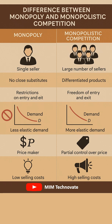The demand curve in a monopoly is less elastic and slopes downward. Similarly, in a monopolistic market, the demand curve is also downward sloping but more elastic in comparison.